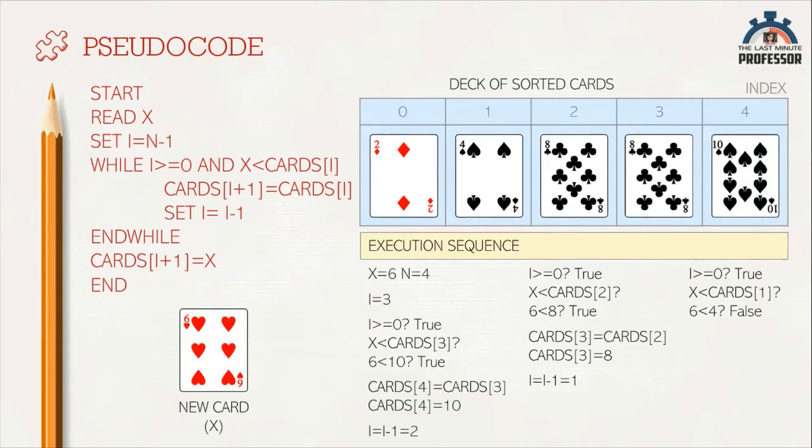So, cards[i+1] equals x. We have reached the position where we have to insert the card. There, we are inserting it. Problem solved.